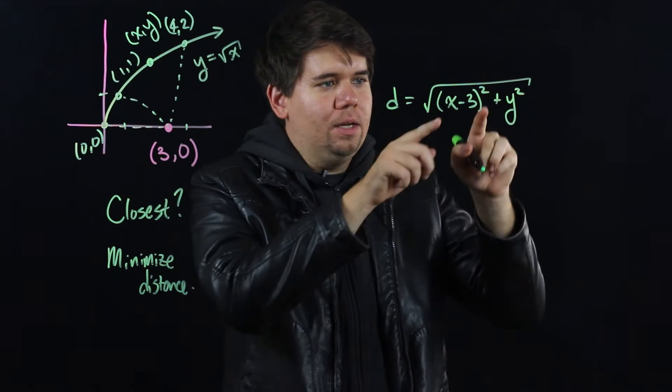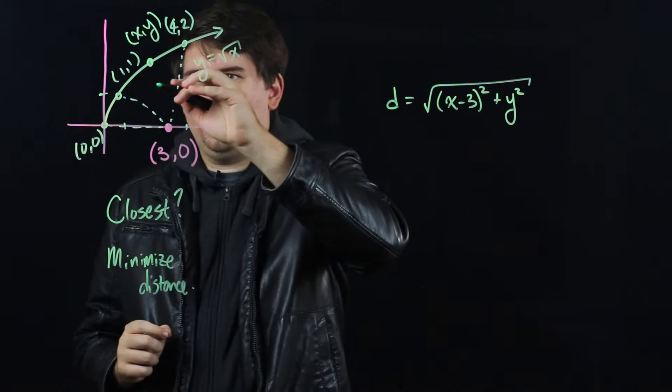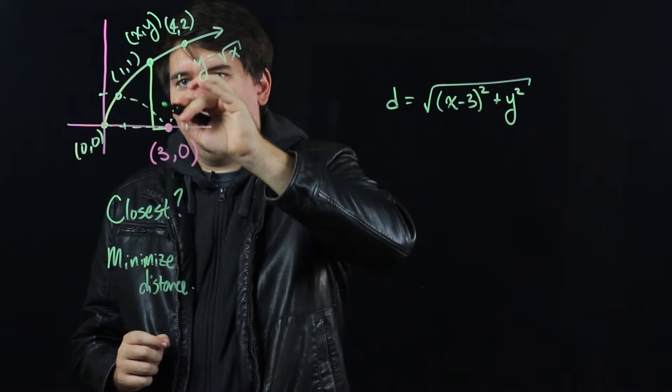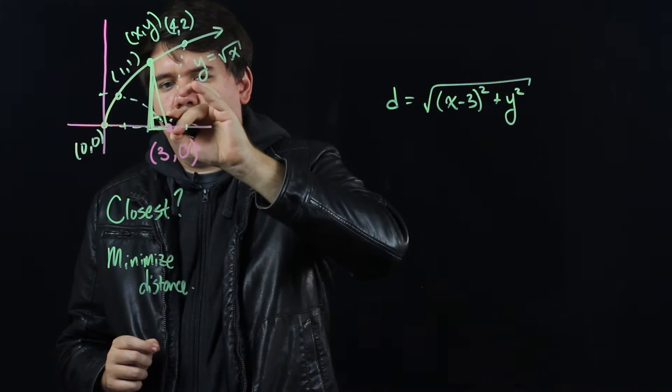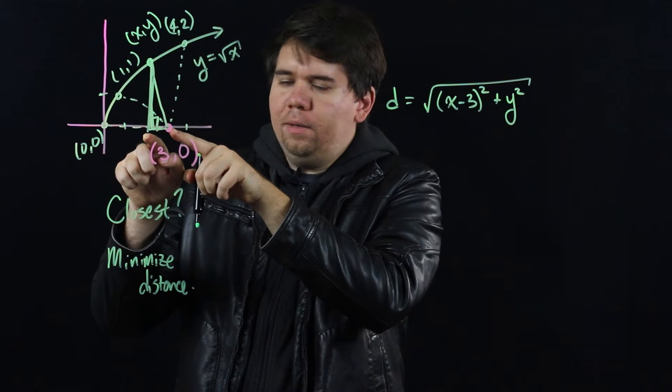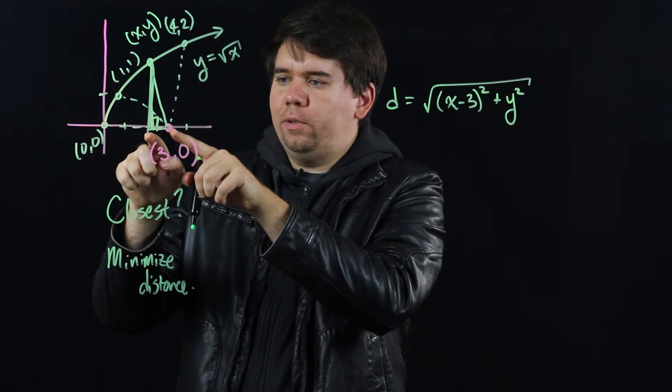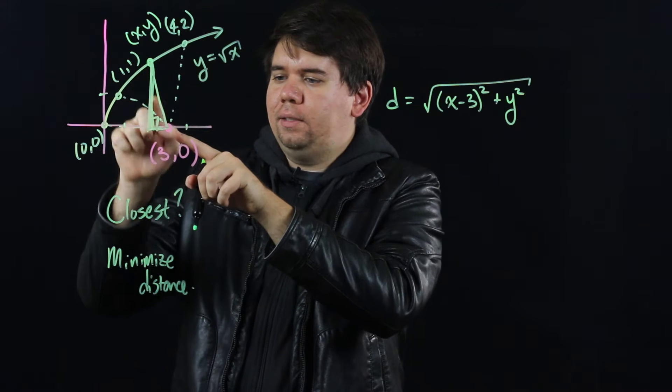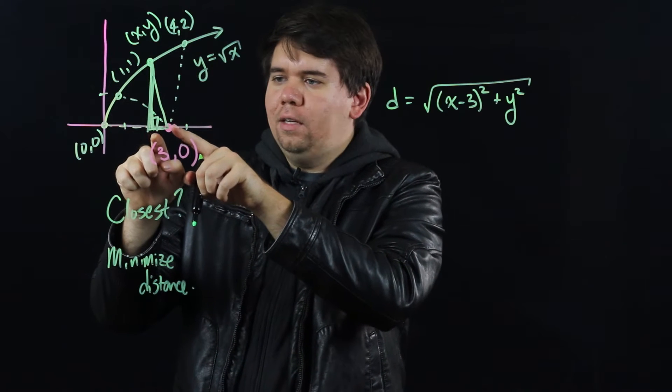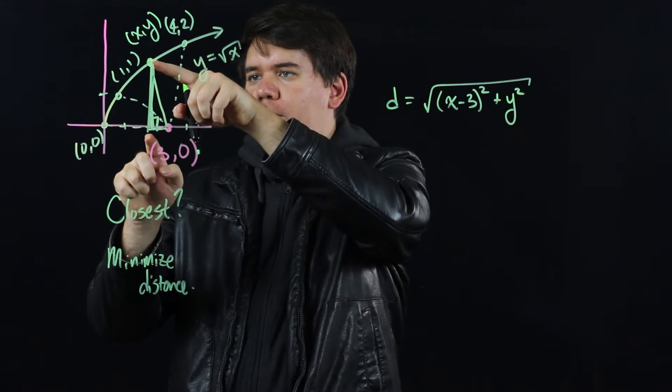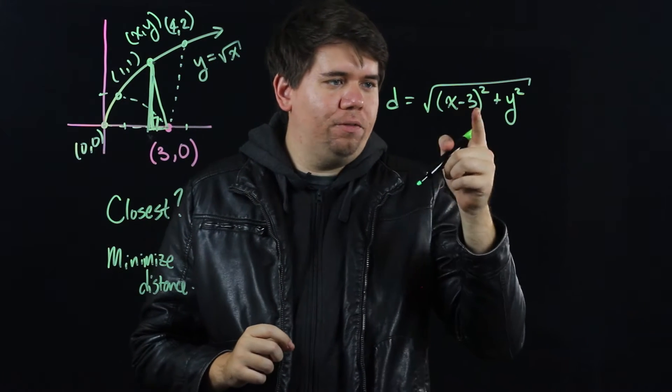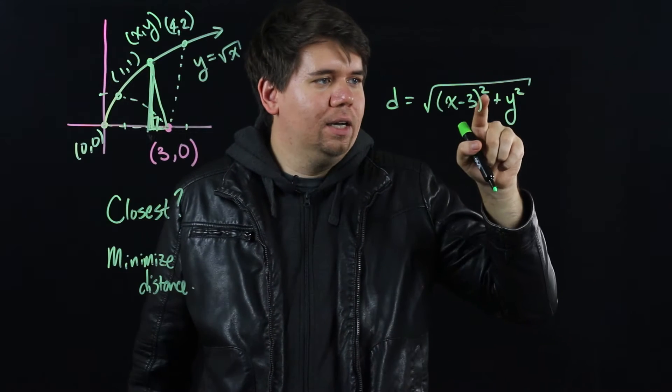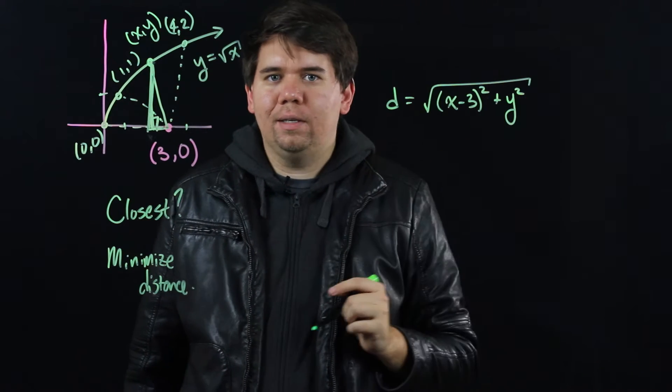This just comes from Pythagoras's theorem. After all, here you just have a right triangle, where the bottom leg is just the difference between the x values, (x-3), and the longer leg is the difference between the y values, (y-0). It doesn't matter if you do 3 minus x or x minus 3 because you're going to be squaring it anyway.